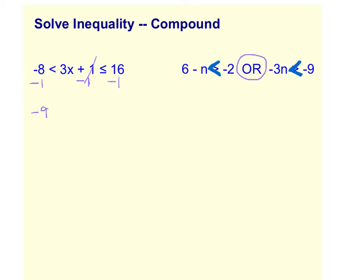You should see your math that you're doing in three different spots as you go along and solve for X. Negative 8 minus 1 is a negative 9. Bring down our less than. We're down to just the 3X inside now. It's less than or equal to 15.